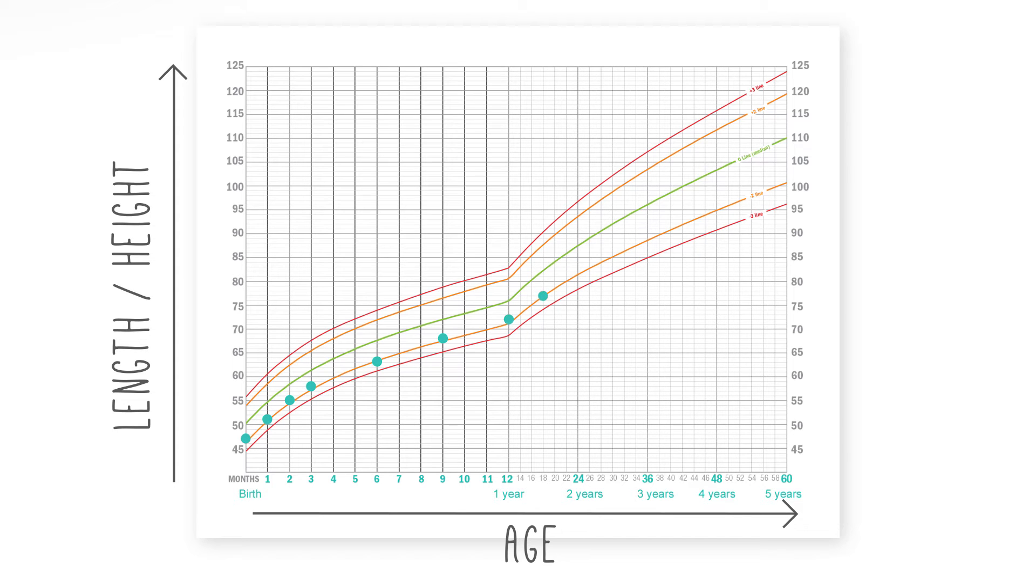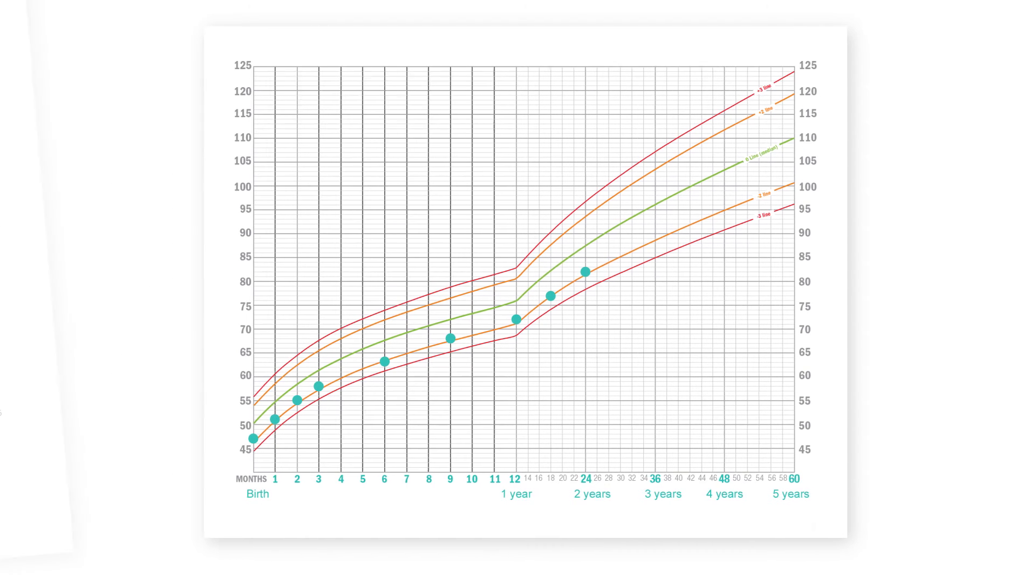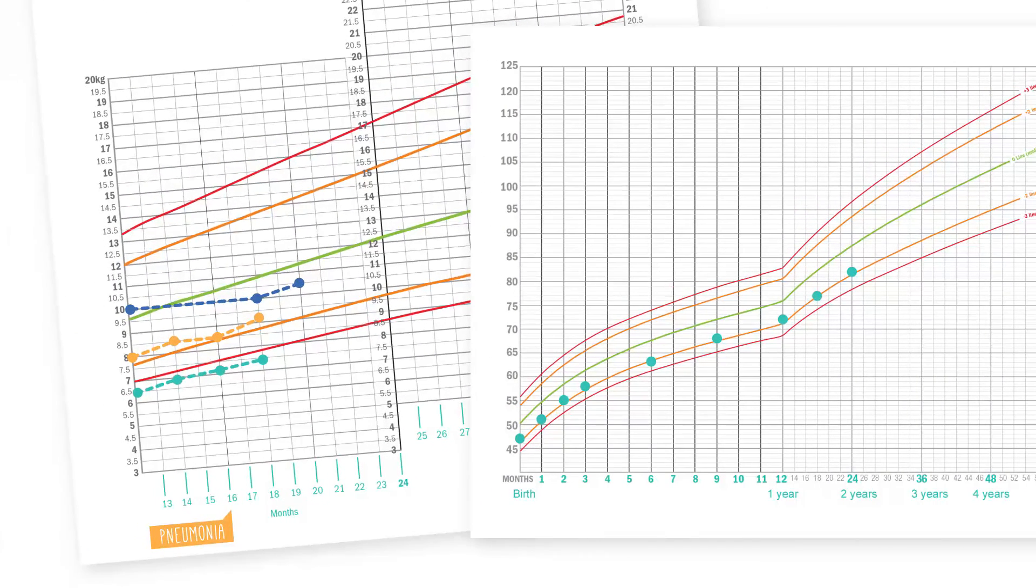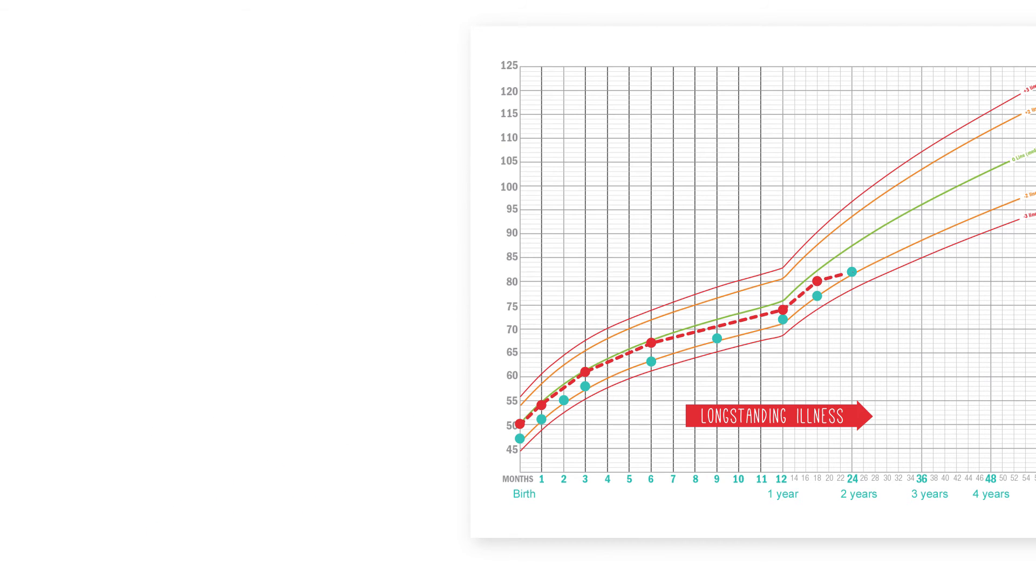But an important distinction between these two growth curves is that a short-term or acute illness, like our orange friend here who had pneumonia, will often result in an acute fall off in weight, but only after long-standing or chronic illness will a child's height drop off.